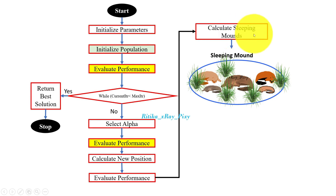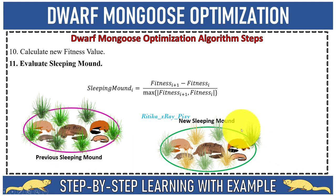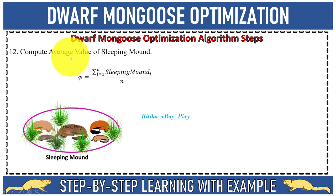Next we calculate the value for the sleeping mounds and discover new sleeping mounds using the sleeping mound equation. The new mound changes during the iterative optimization process. Since mongoose do not return to previously visited sites, we need new sleeping mounds calculated using this equation. We then calculate the average value of the sleeping mounds, which will be used in the babysitter exchange phase.